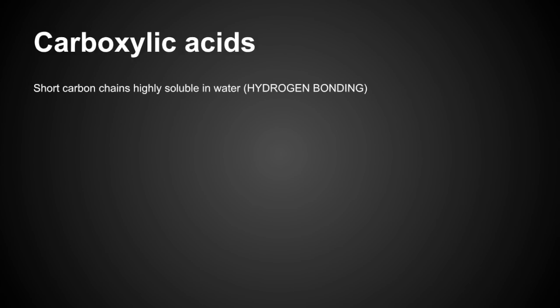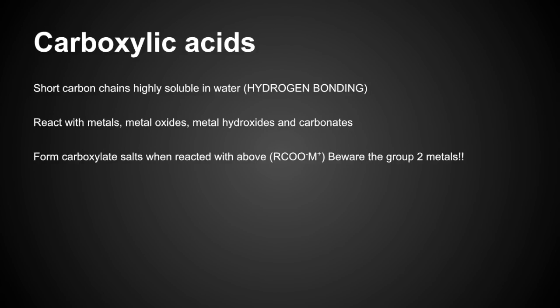Moving on to carboxylic acids. The short carbon chain carboxylic acids, methanoic, ethanoic, and so on, are very soluble in water because they can hydrogen bond very easily. As the carbon chain gets longer, the induced dipole forces between the carbon chains start to get quite strong and makes them less soluble. They react with metals, metal oxides, metal hydroxides, and carbonates. These reactions generate carboxylate salts. Just beware the group 2 metals. The carboxylate ion has a 1- charge, so if you've got magnesium in your salt, you'd need 2 of these in a bracket, and then it would be Mg2+ outside.